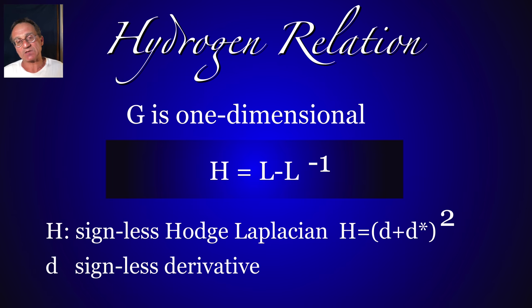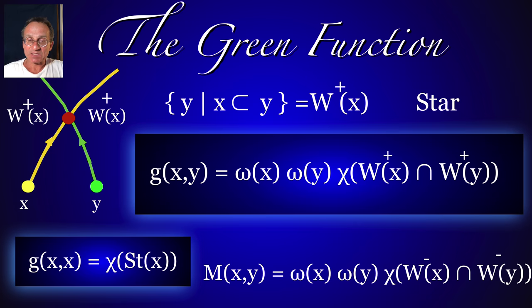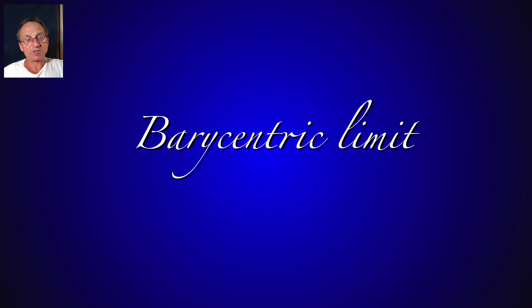And there is another interesting relation in one dimension, that L minus L minus 1 is the signless Hodge Laplacian. So it's related to something which has to do with cohomology, while L is not cohomological. The green function entries can be explicitly given. It's the Euler characteristic of the intersection of the stars x and y. And we think about them as unstable manifolds, intersection of unstable manifolds.